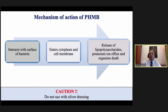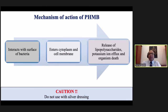Another available solution is PHMB — polyhexamethylene biguanide. Mechanism is similar to silver: it interacts with bacteria, interacts with the cell membrane, and causes cell death. However, when using PHMB solution, do not use it along with silver — when we accidentally combined PHMB with silver ointment in our practice, there was immediate bluish-green discoloration. So if you open the wound after two days and see greenish color, don't panic thinking it is Pseudomonas — it may be a PHMB-silver reaction.